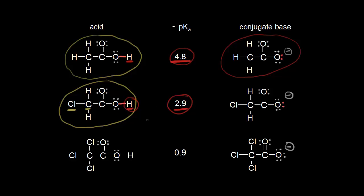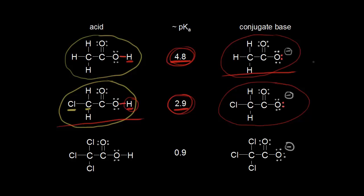The lower the pKa, the more acidic the compound. That difference is approximately 100 times more acidic — about two pH units, so 10 to the second power. Chloroacetic acid is much more acidic than acetic acid. Looking at the conjugate bases, we can understand why: this conjugate base must be more stable than the conjugate base of acetic acid.